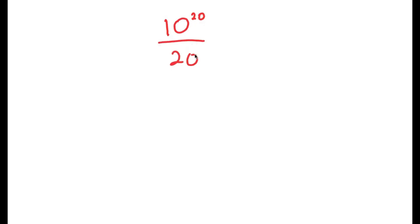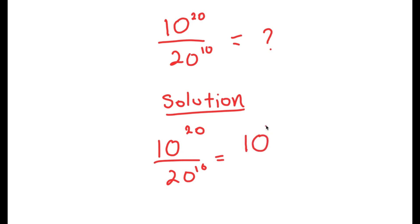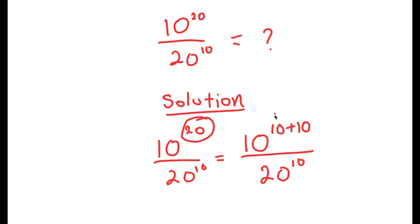In this video, I'm going to solve the problem 10 to the power of 20 over 20 to the power of 10 — I want to find the value of this. I'm first going to rewrite 10 to the power of 20 as 10 to the power of 10 plus 10, over 20 to the power of 10, by rewriting the exponent 20 as 10 plus 10.